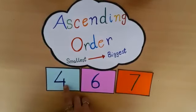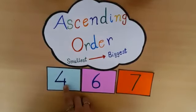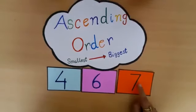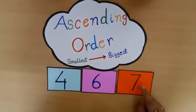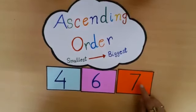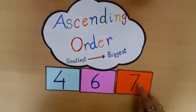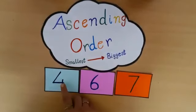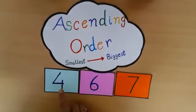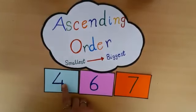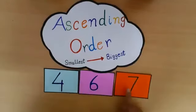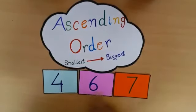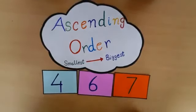4 is the smallest number and 7 is the biggest — we can also say greatest number. So we have arranged these numbers from smallest to biggest, or smallest to greatest.